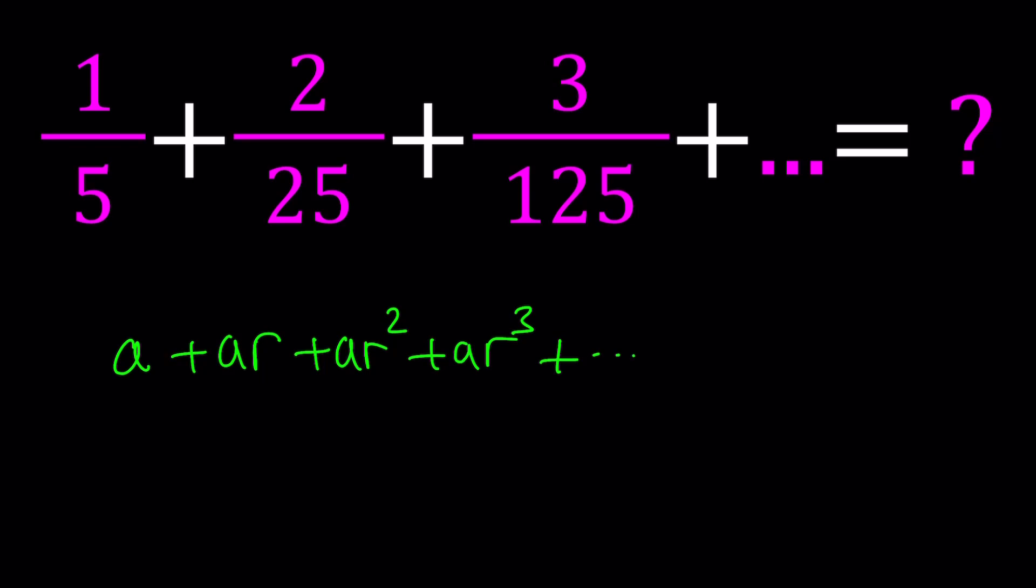And of course, r needs to be between negative 1 and 1. In that case, this converges, and it converges to a over 1 minus r.